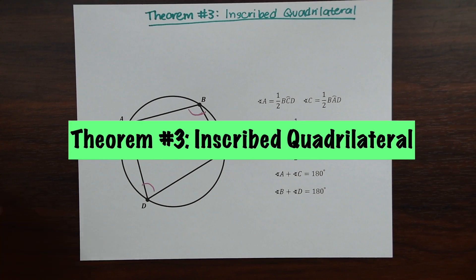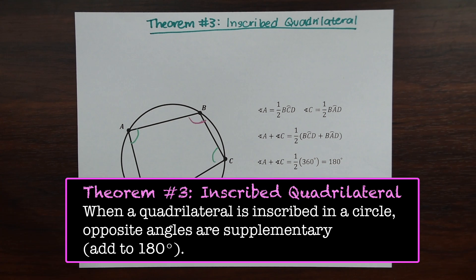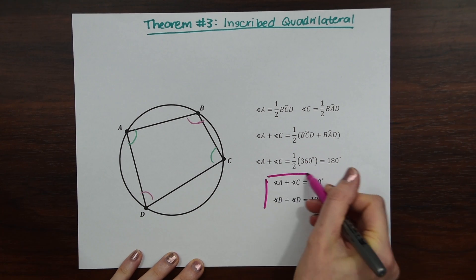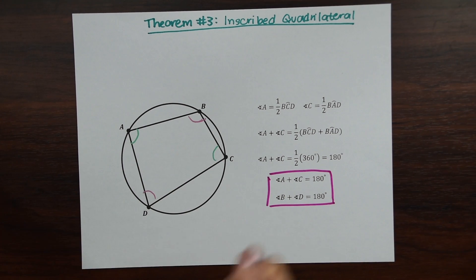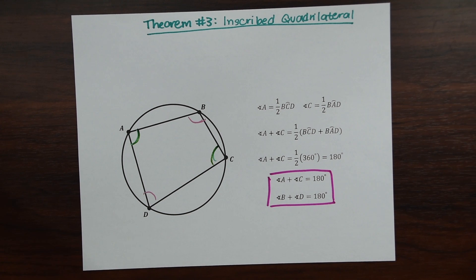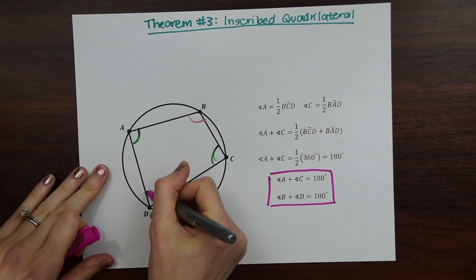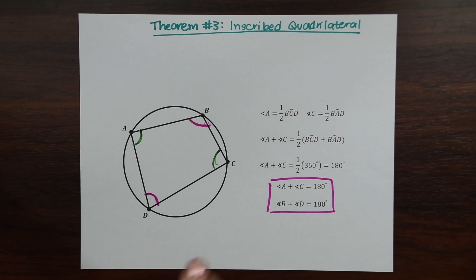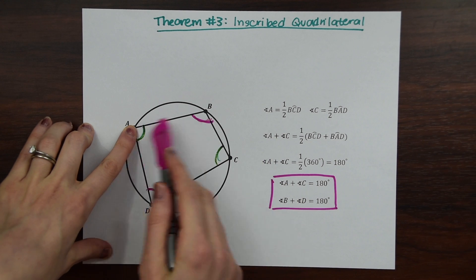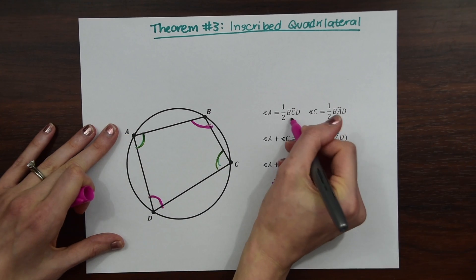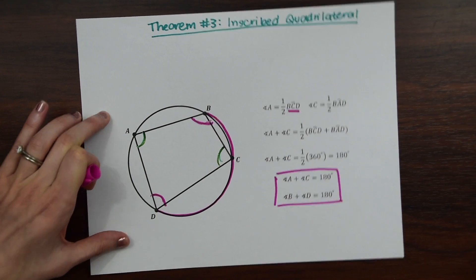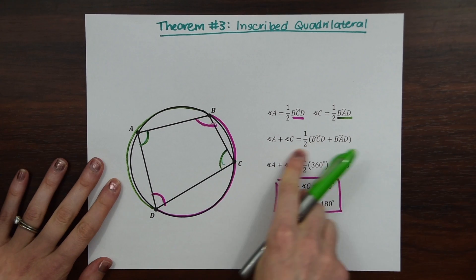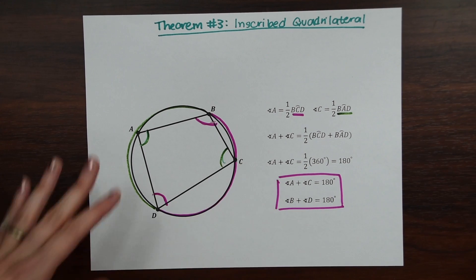For the last theorem, for inscribed quadrilaterals, when a quadrilateral is inscribed in a circle, opposite angles are supplementary, otherwise known as they add to 180 degrees. So here's the main rule. If you look, we have angle A and angle C, so angle A and angle C are supplementary, they add to 180 degrees, and then angle B and angle D are also supplementary because they're opposites. So that's all this is saying, and here's just a proof of why that's true. So if you look at angle A, half of arc BCD, BCD represents everything here, half the circle, and then arc BAD represents the other part of the circle. So all together, adding them all together, we get half of 360, which is equal to 180. So that's where this theorem comes from.